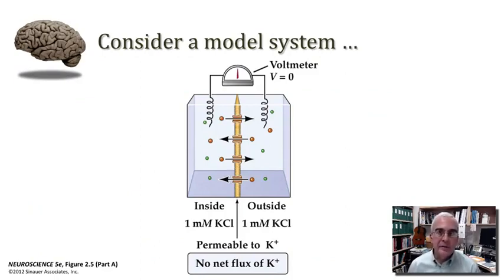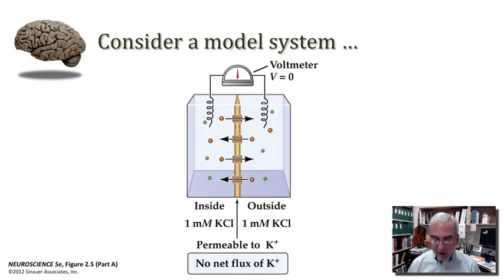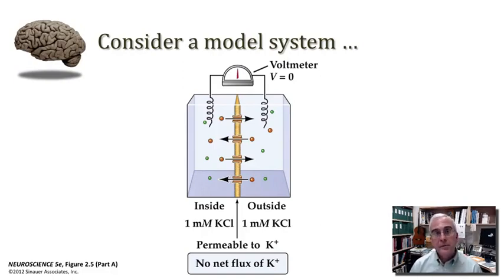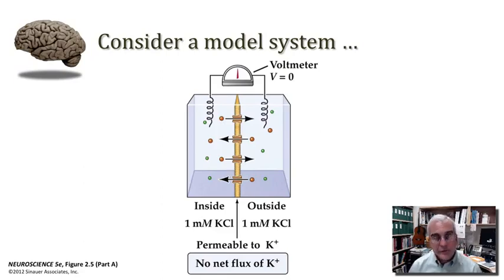Let's consider a simple model system. We have a semi-permeable membrane dividing a container into two compartments, with ion channels that allow for the passage of potassium ions. We've filled the container with a 1 millimolar potassium chloride solution, with the membrane running down the middle. Under these conditions, potassium ions are free to pass from one side to the other with no net flux. If we insert electrodes into either side and record an electrical potential, the voltmeter would record a potential of zero.